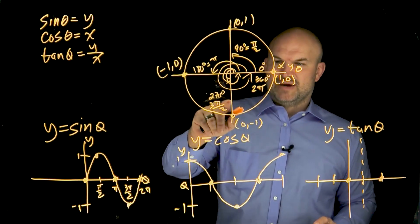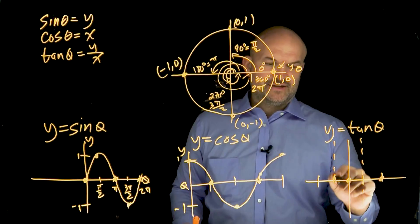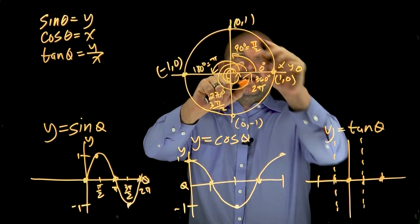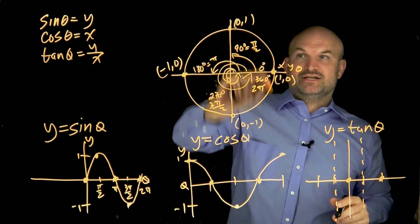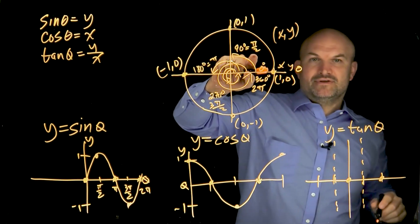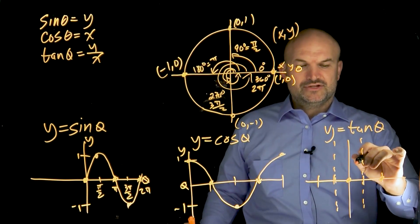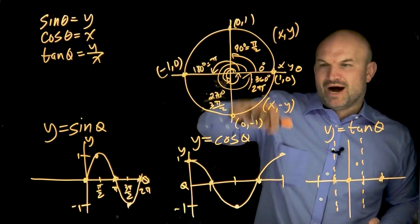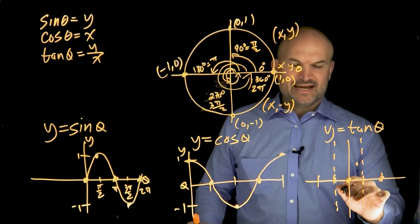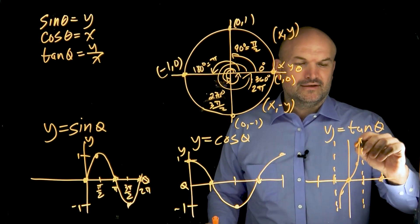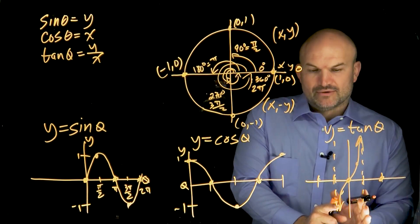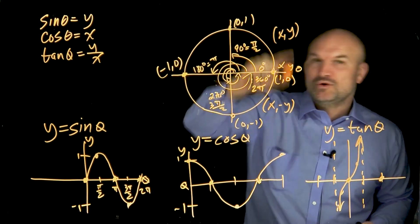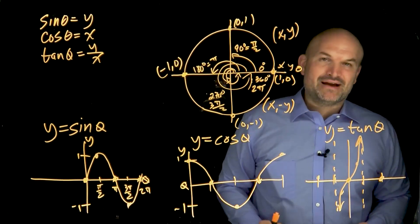Between zero and pi halves, any Y over X in the first quadrant is always positive because both X and Y are positive. In the fourth quadrant going negative, X is positive and Y is negative, so the ratio is always negative. The graph always approaches the asymptotes. So all you need to know are these definitions and these four coordinate points on the unit circle, and you can graph sine, cosine, and tangent quickly.